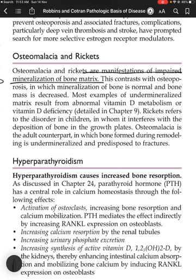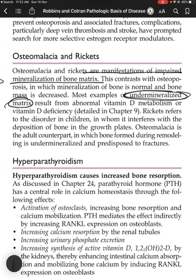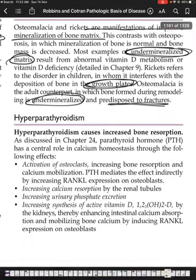Osteomalacia and rickets are manifestations of impaired mineralization of bone matrix — contrasting with osteoporosis, in which mineralization is normal but bone mass is quantitatively decreased. Most examples result from abnormal vitamin D metabolism or deficiency. Rickets refers to the disorder in children, in whom it interferes with deposition of bone in the growth plates, whereas osteomalacia is the adult counterpart in which bone formed during remodeling is under-mineralized and predisposed to fractures.